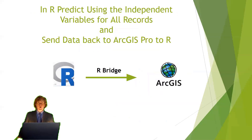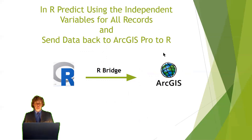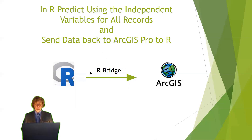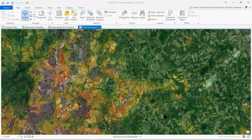After having a validated model, it's time to use it. We used all our data to predict the probability of being developed in R, then used R-Bridge to push this data back to ArcGIS Pro. We can now take a look at the results in ArcGIS Pro. The predictions from R have already been updated through R-Bridge.